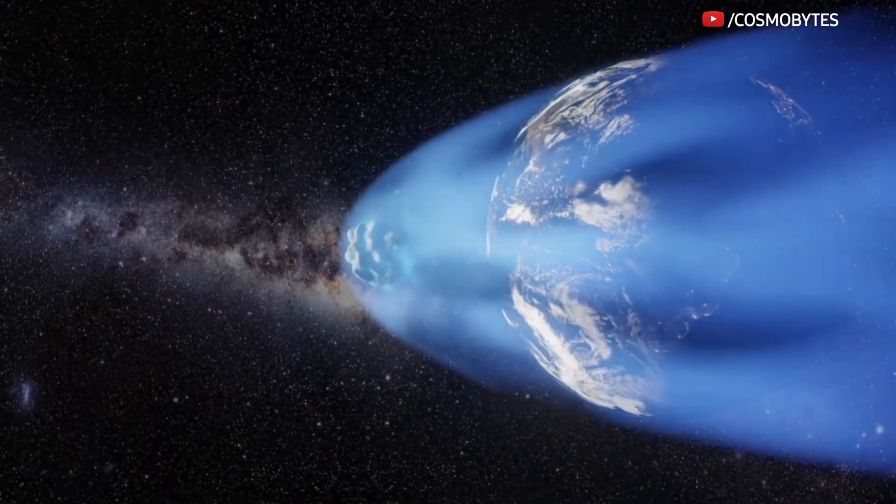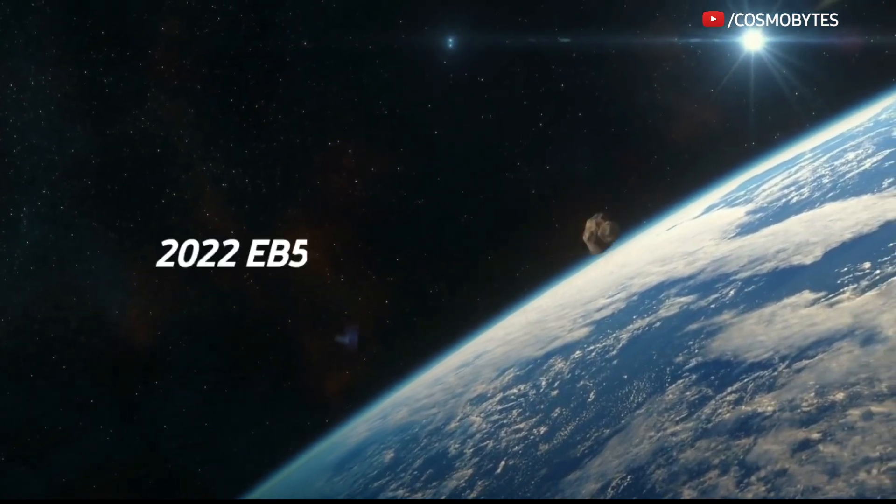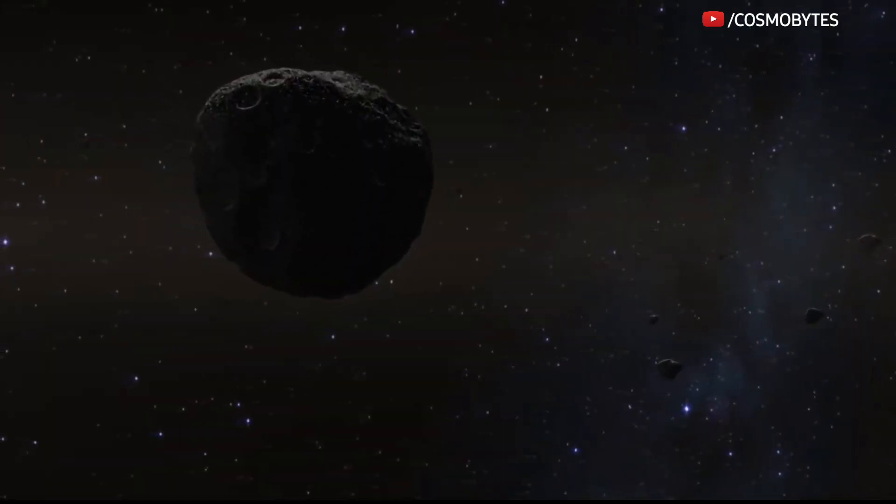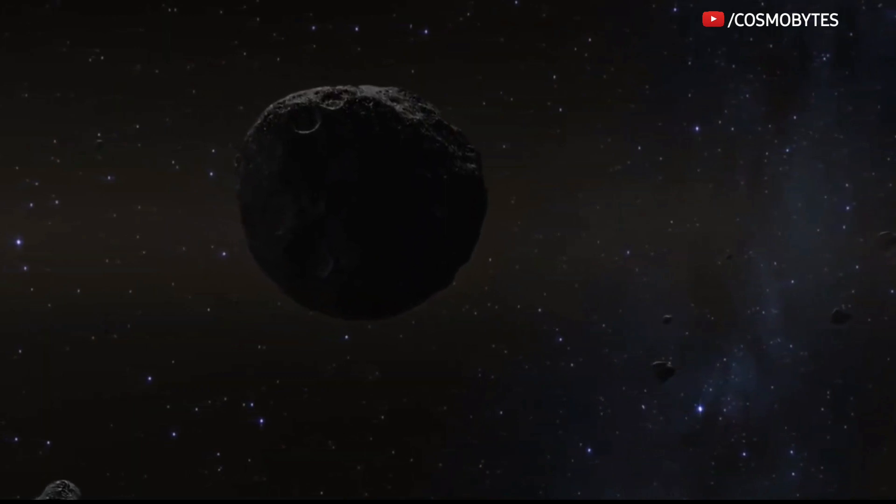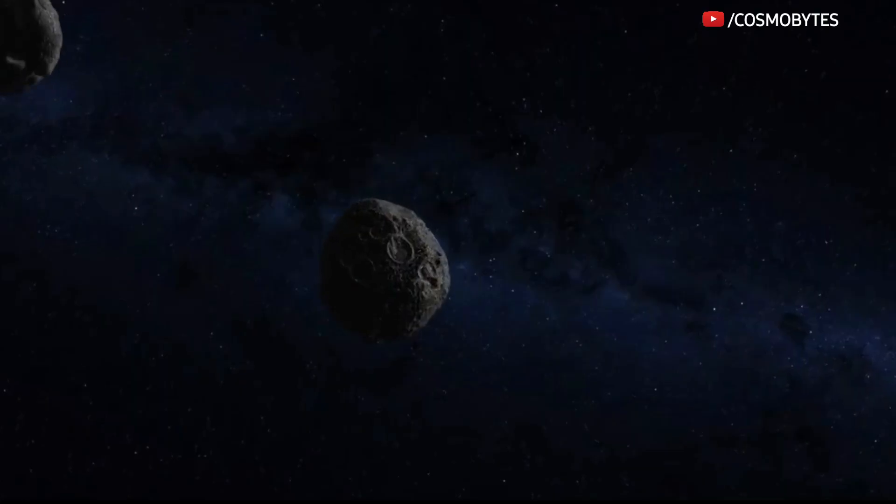In the last month, we have seen two instances of an asteroid striking the planet, with 2022 EB5 being the more noteworthy among them. Luckily, those asteroids were extremely small and did not cause any damage. But an asteroid as large as 79 feet can change things very quickly.